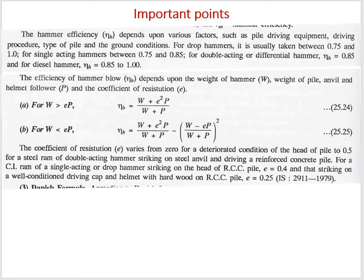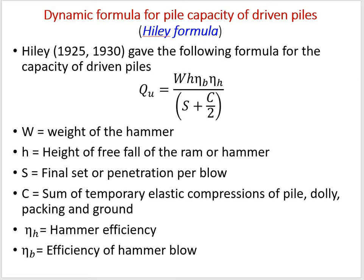There are two efficiencies to consider: the hammer efficiency (ηh) and the hammer blow efficiency (ηb). Hiley developed a formula to find the ultimate capacity of a driven pile: Qu = (W × h × ηb × ηh) / (s + c/2), where W is the weight of the hammer, h is the drop height, ηb is the hammer blow efficiency, ηh is the hammer efficiency, s is the average settlement or final set per blow, and c is the sum of temporary elastic compressions.